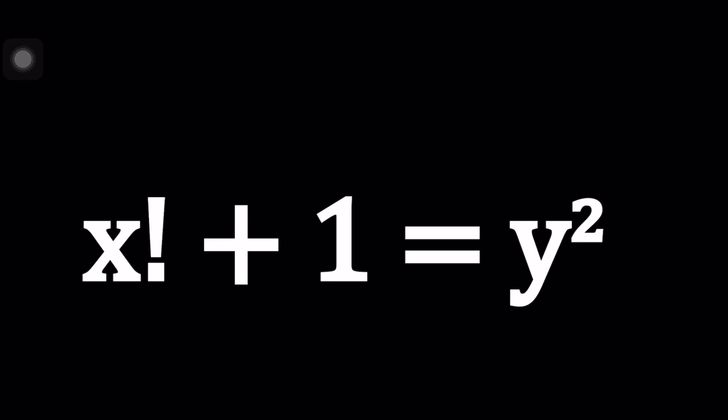Hello everyone. In this video we're going to be looking at the solutions of Brokart's problem. We have x factorial plus 1 equals y squared where x and y are positive integers. We're also going to consider some cases where one of the numbers at least is not a positive integer.